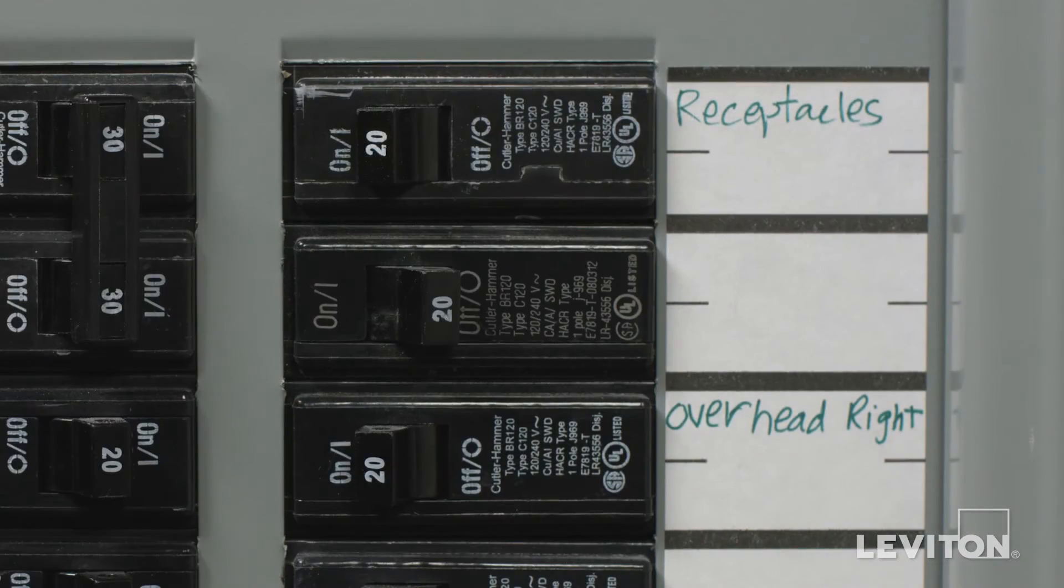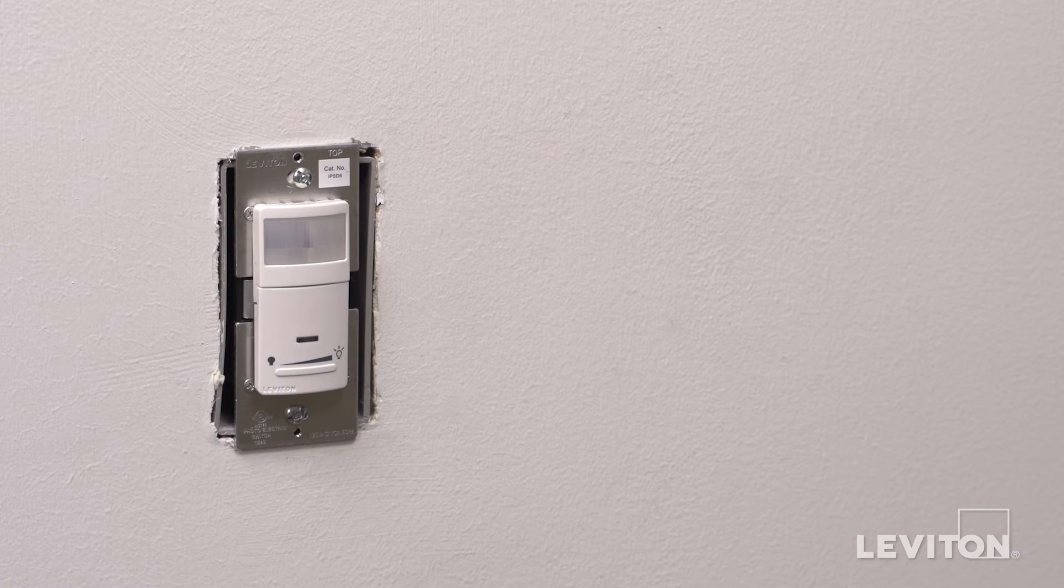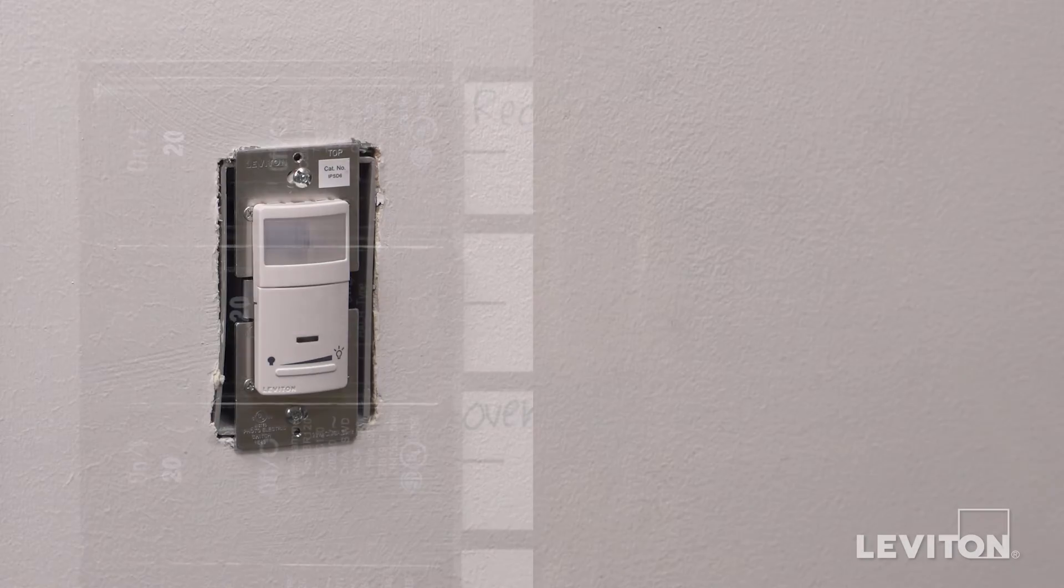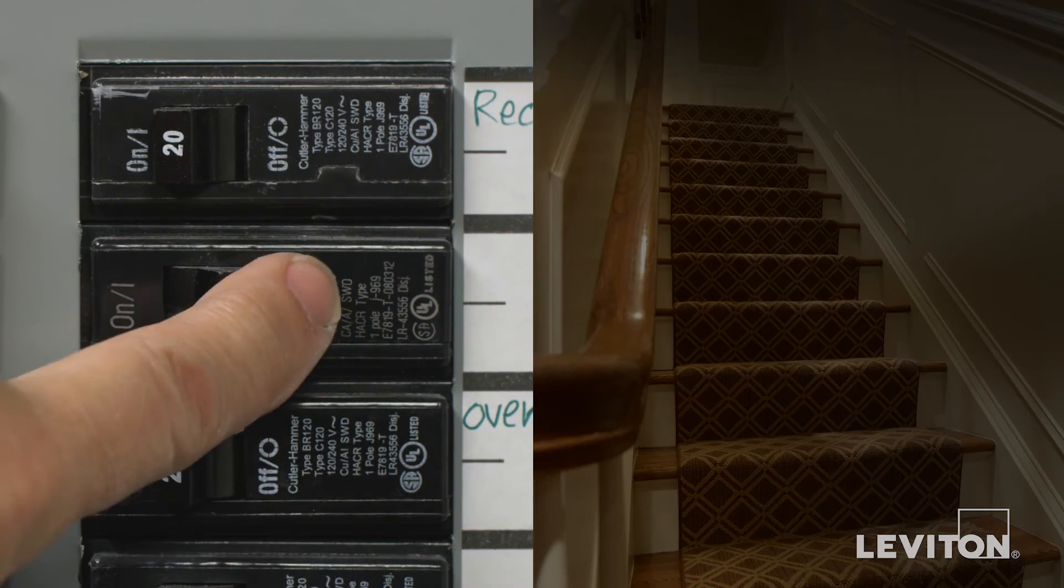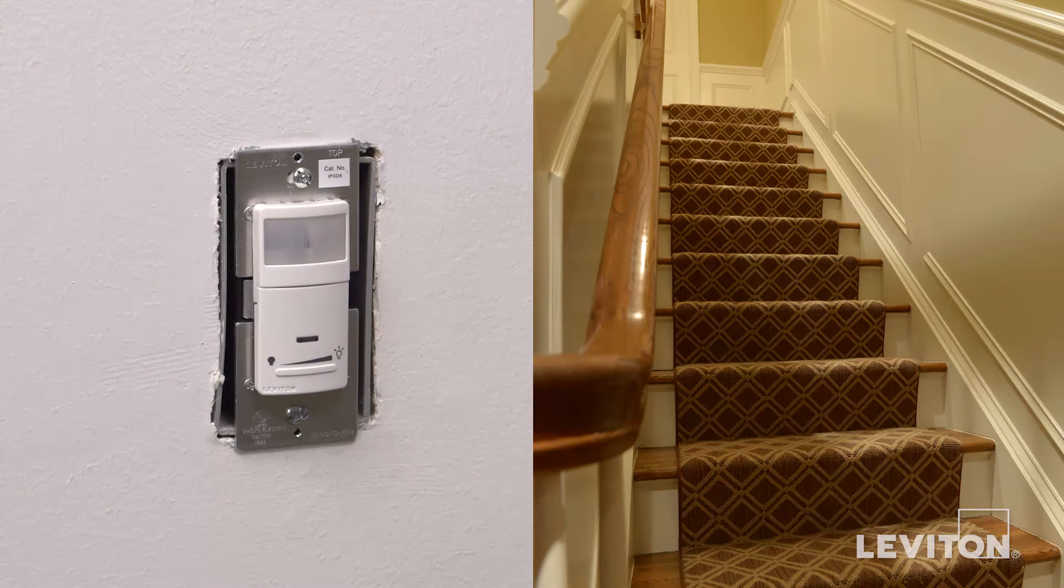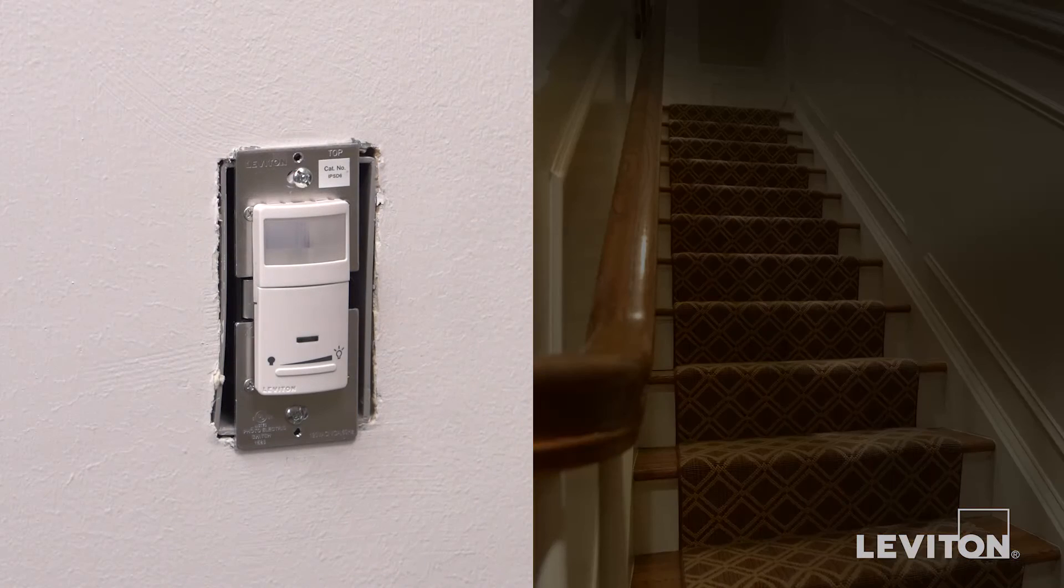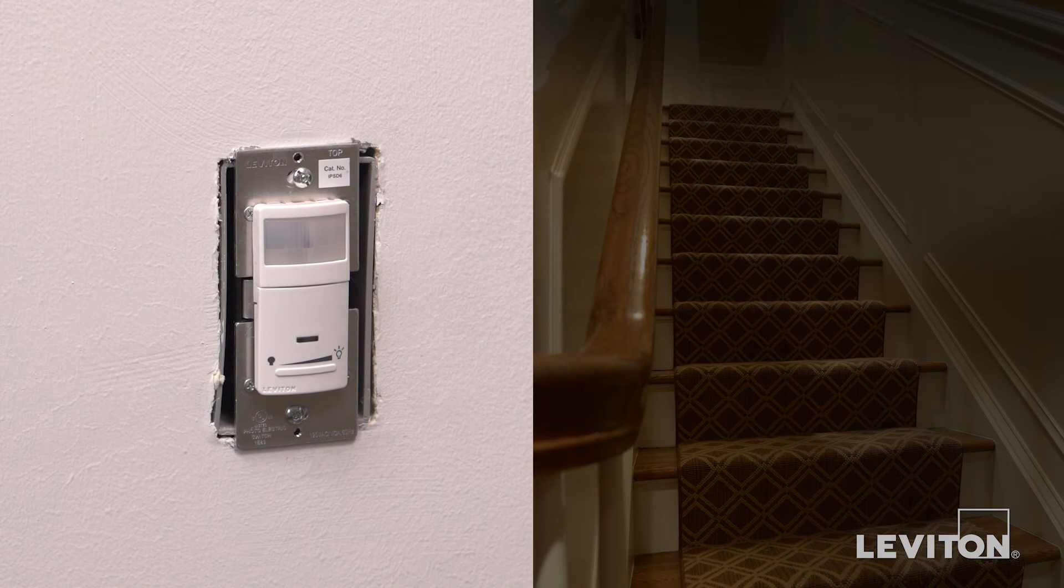Restore power at circuit breaker or fuse. For IPSD6, lights will automatically turn on after power is applied because it is an occupancy sensor. This means the device automatically turns the lights on when motion is detected and automatically turns the lights off when motion is no longer detected.